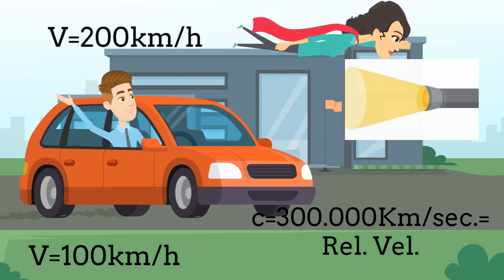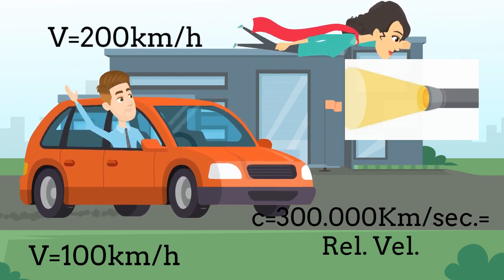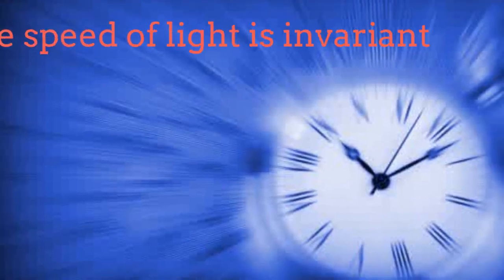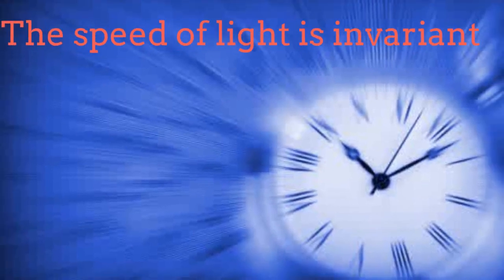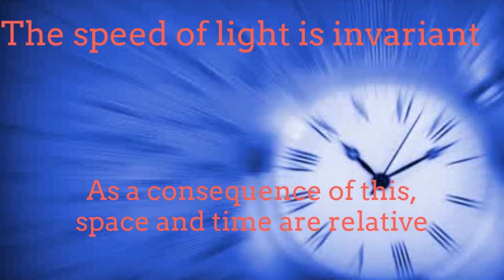No matter in which direction we move with respect to the light, we will always perceive the speed of light as 300,000 km per second. If the speed of light is an invariant, then space and time are relative to the observers. In other words, travelling in time is possible.